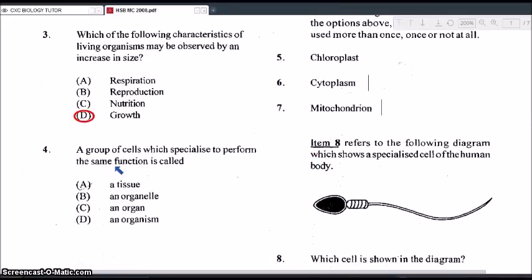Okay, question 4. The group of cells which specialize to perform the same function is called, is it A, a tissue, B, an organelle, C, an organ, or D, an organism? So the correct answer for that would be a tissue. It cannot be an organelle. The organelle are the structures found within the cells. The organ would be a group of tissues coming together to perform a particular function. And the organism would be the collection of the various organ systems that would make up the entire body. So the organism on a whole. So it has to be A, a tissue.